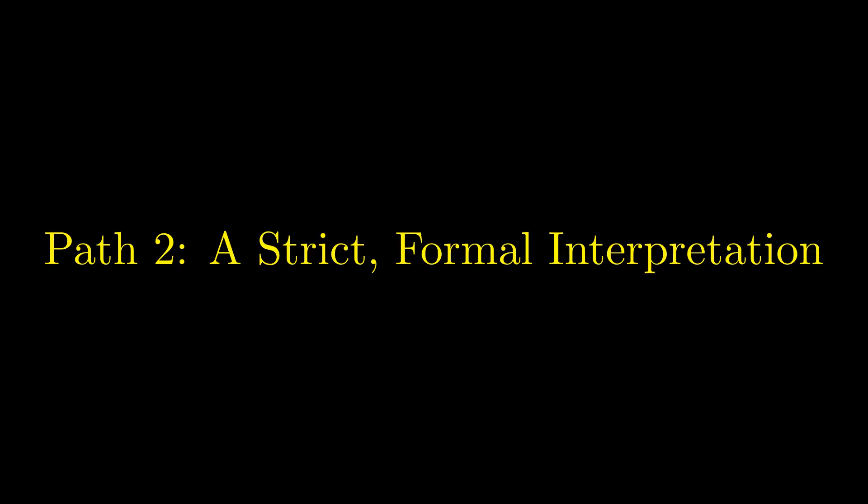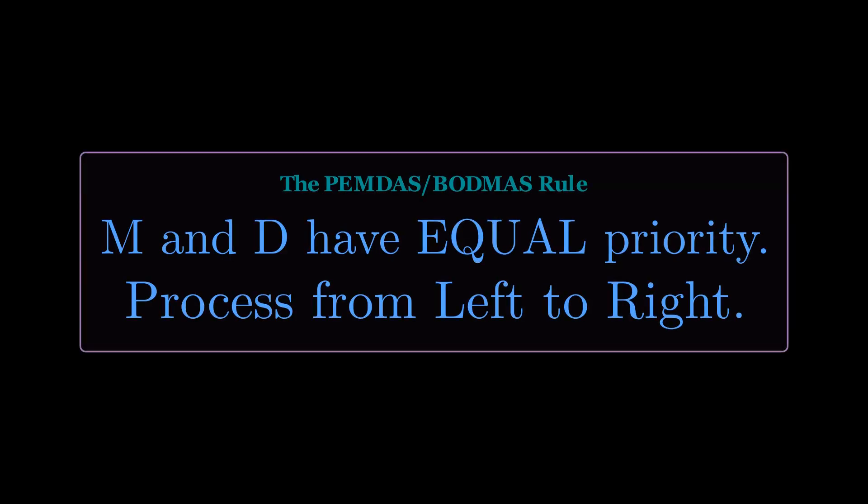Now let's look at team 256's argument, and this one's going to surprise you. Here's the fundamental rule: multiplication and division have equal priority in order of operations. They're at the same level. When you see them together, you process left to right. There's debate about implied multiplication, but the formal convention treats all multiplication the same.